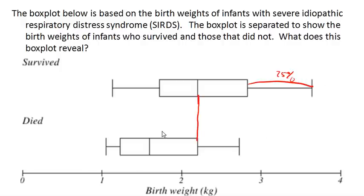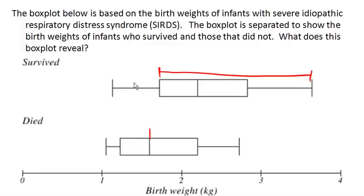Likewise, notice that quartile 1 of the survivors is bigger than the median of those who died. Quartile 1 represents the bottom 25% of the data, leaving 75% above it. So 75% of infants who survived had a higher birth weight than the median birth weight of an infant that died. This gives us a quick, admittedly informal way to look at data and get some idea of what's going on.